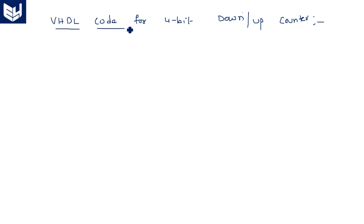First, any VHDL code starts with the library IEEE, use IEEE dot std_logic_1164 dot all. Use IEEE dot std_logic_unsigned dot all.